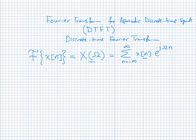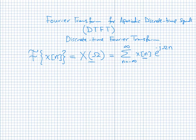When we did the Fourier series for periodic signals, the frequency domain was also discrete. But for aperiodic discrete-time signals, the frequency becomes continuous. However, it is still periodic in frequency because the signal is discrete. The frequency domain is periodic with period 2π.